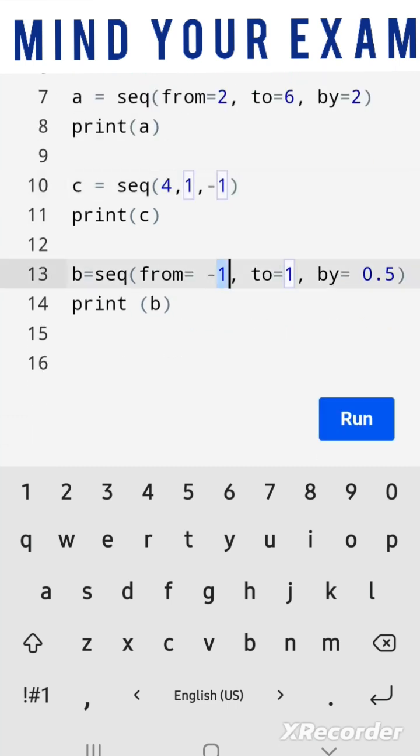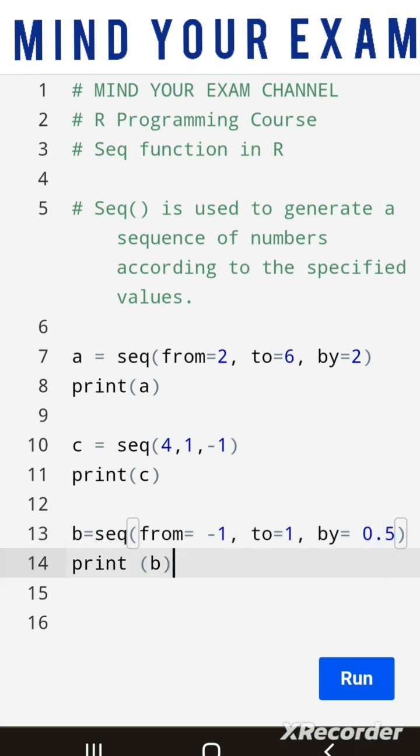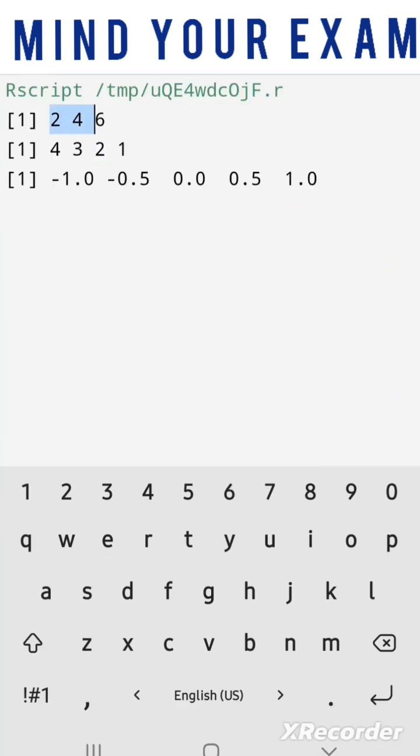The last case tells that the starting or ending value can also be a negative integer and the spacing between the two values can be a decimal. So let's see the output of each of them. In the first case, the output is 2.